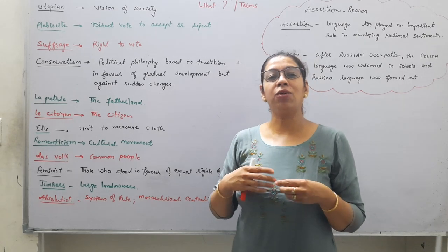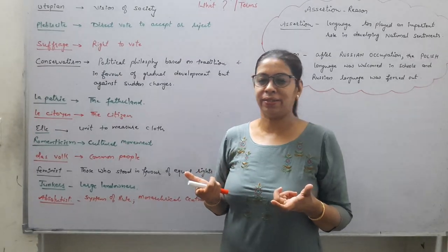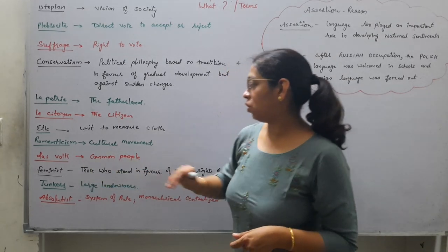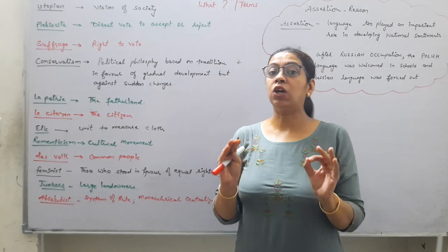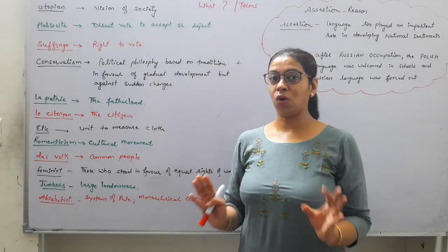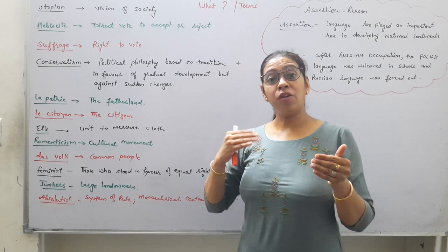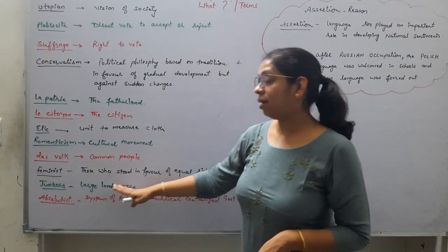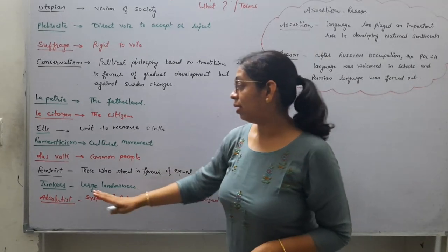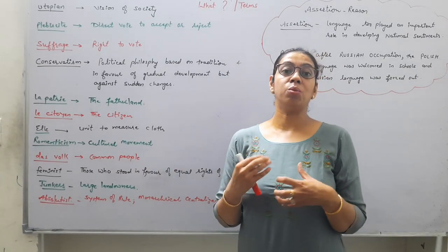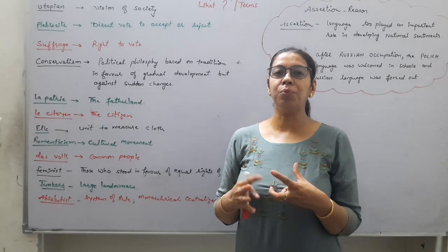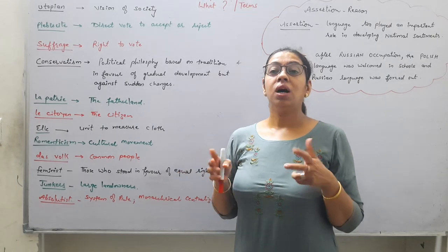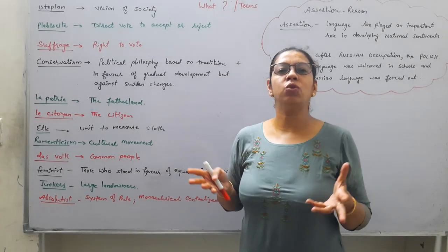Romanticism cannot be calculated or understood through logic and science. Feminists — all those who stood in favor of equal rights for women; any male or female who supports this can be called a feminist. Junkers — large landowners. Absolutism — a system of rule, especially monarchical governments that use unlimited powers with no one to check them.